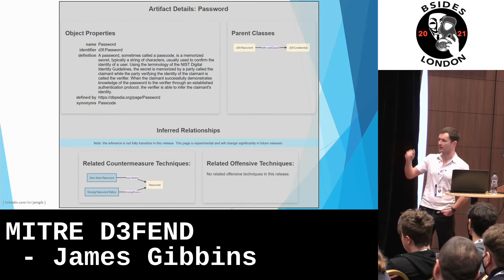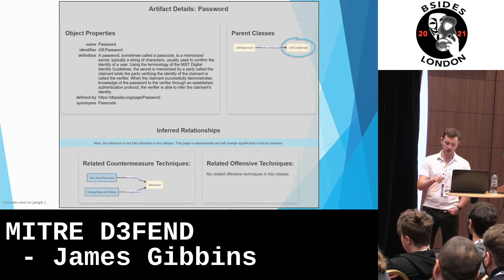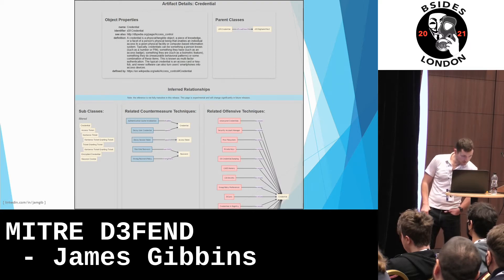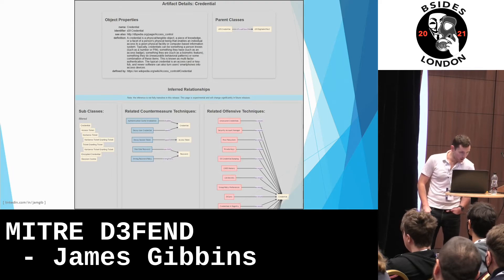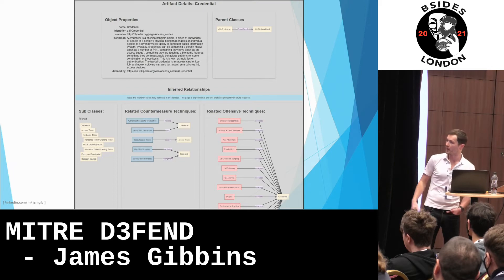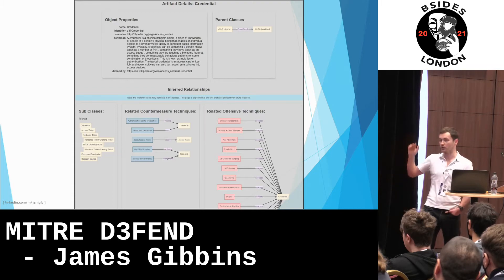You can also see there's a parent class of credential. If we look at that, there's a lot more — for example, there are subclasses such as session cookies and encrypted credentials, purpose tickets, and so on. There are more countermeasure techniques such as decoy tokens and decoy credentials. And there's a very long list of MITRE ATT&CK attacks, such as credential dumping, LSASS, secrets, and similar techniques.